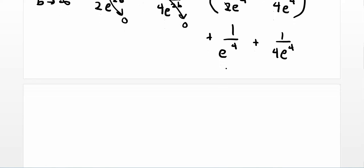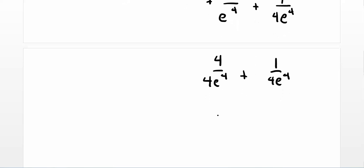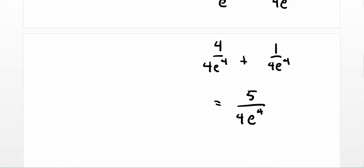Let's simplify this a bit. This is 4 over 4 e to the 4th plus 1 over 4 e to the 4th, just getting that common denominator. And this is of course 5 over 4 e to the 4th. Again, our integral approaches a number, so we say it converges. And it converges to this.